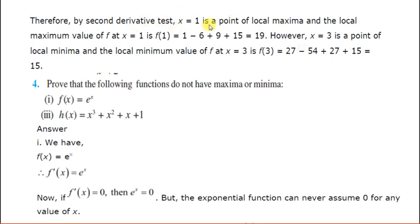So x = 1 is a point of local maxima. The local maximum value is found by putting x = 1 in the given function, and that is 19. Similarly, x = 3 is a point of local minima, and the local minimum value is found by replacing x with 3 in the given function.